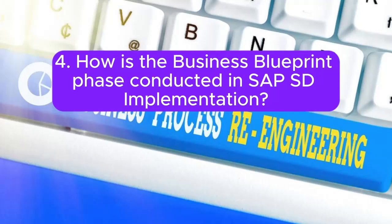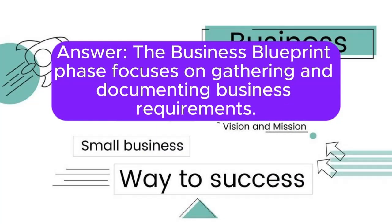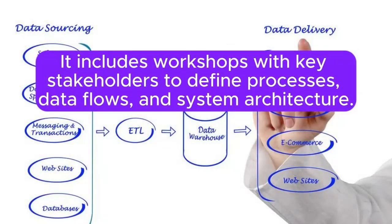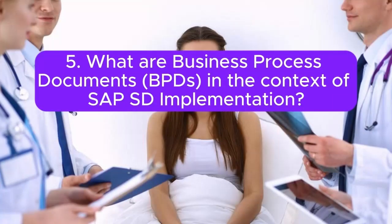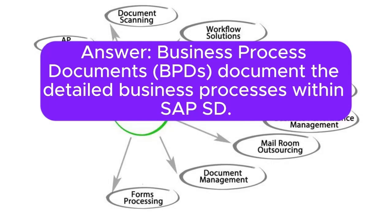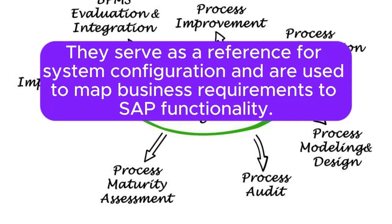Question 4: How is the business blueprint phase conducted in SAP SD implementation? Answer: The business blueprint phase focuses on gathering and documenting business requirements. It includes workshops with key stakeholders to define processes, data flows, and system architecture.